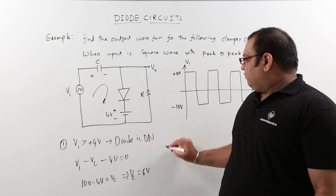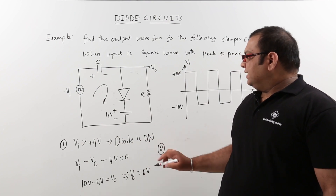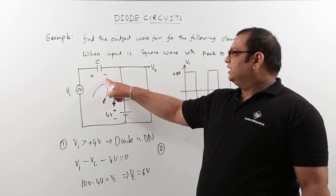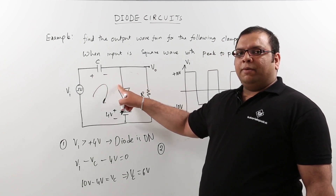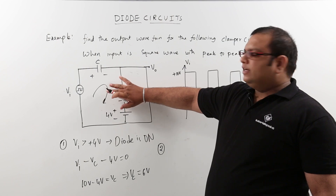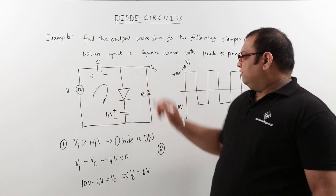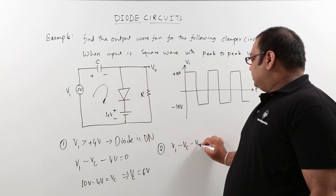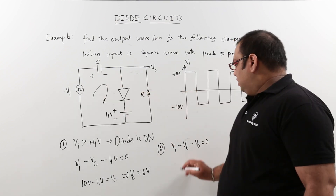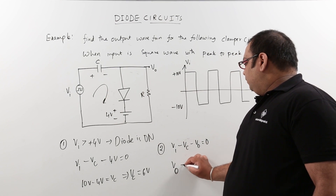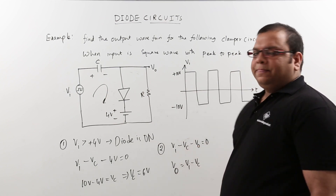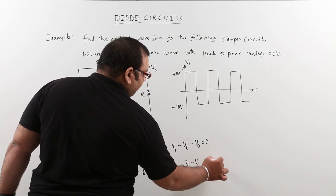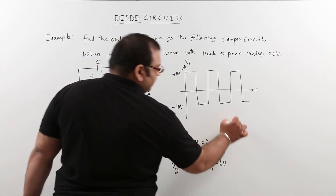In the second step, the capacitor is charged to 6 volts, with the negative polarity connected to the diode's positive terminal, so the diode will be in the OFF condition. When the diode is off, we take the loop equation for the total circuit: Va minus Vc minus V0 equals 0, which gives V0 equals Va minus Vc. Since Vc is 6 volts, the output is Va minus 6 volts.